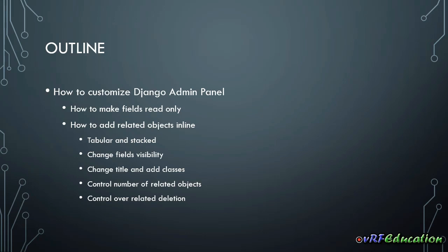Today we're going to focus on related objects. In the previous session we had a Course class and for each course we had a couple of lessons. Until now, we needed to create a course and then go to the lessons page to add lessons for that specific course. Now we want to change the admin panel to be able to add related objects — in this scenario, lessons — directly to the course add page. There are two ways to do this: tabular or stacked inline.